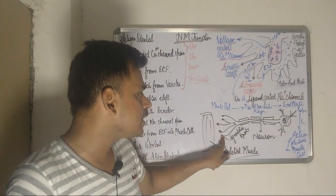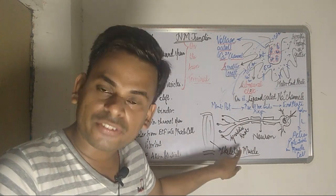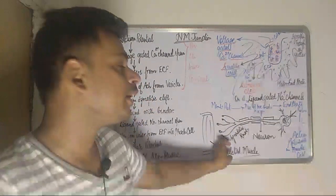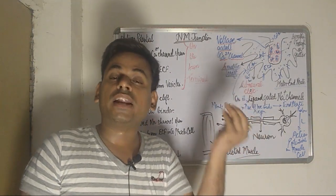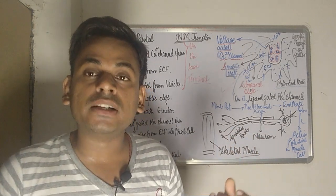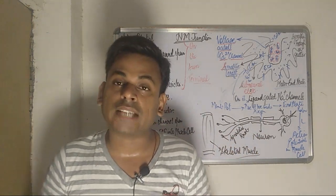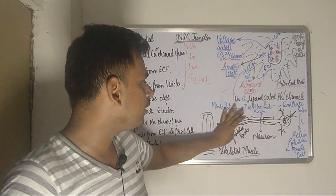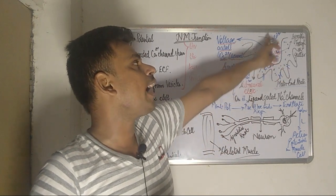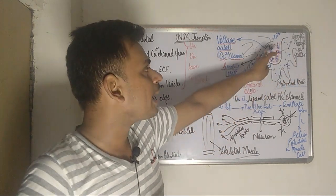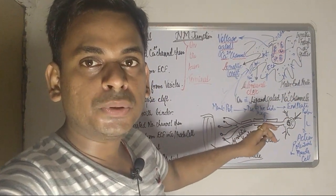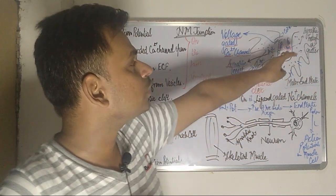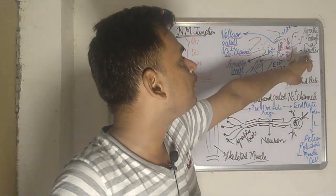These synaptic knobs are the sites where the wave of the action potential finally reaches. From the synaptic knob or synaptic bulb, there is presence of a chemical neurotransmitter called acetylcholine. In high power, this synaptic knob can be looked upon in a schematic diagram, and it is also called the synaptic trough or the synaptic gutter.